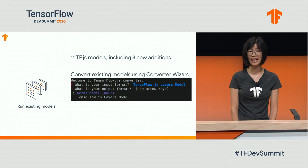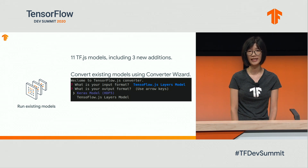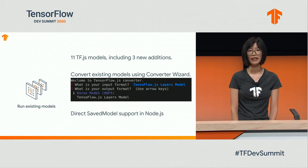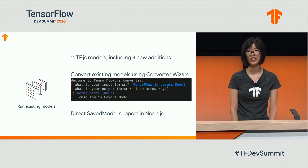If you already have a trained model somewhere, we provide a converter for you to convert the model to TF.js format. We just launched the converter wizard, an interactive command line tool to help you figure out the correct parameters. If you have a saved model and your model will run in Node.js, then you can directly run it without conversion — so no missing ops headache anymore.